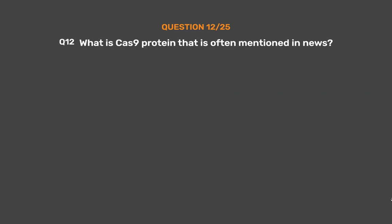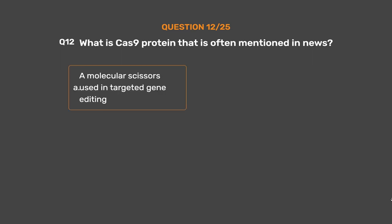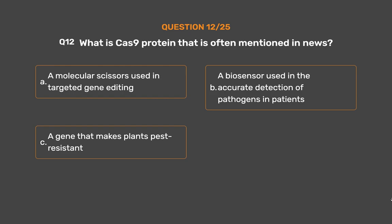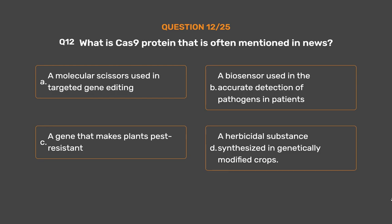Question No. 12: What is Cas9 protein that is often mentioned in news? Option A: A molecular scissors used in targeted gene editing. Option B: A biosensor used in the accurate detection of pathogens in patients. Option C: A gene that makes plants pest resistant. Option D: A herbicidal substance synthesized in genetically modified crops.